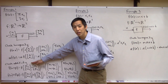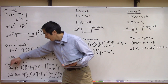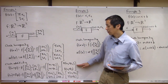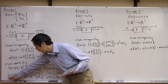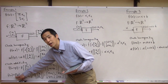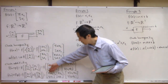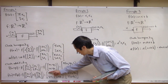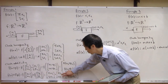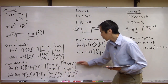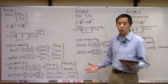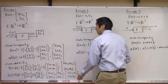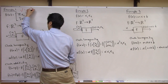Now checking additivity for F: take two inputs W and P, add them together first, then run through F — you get a result. Then run W through F by itself, run P through F by itself (each doing the flipping and scaling), and add the two outputs. Lo and behold, both give the exact same answer. Since both homogeneity and additivity pass, this function F is linear.